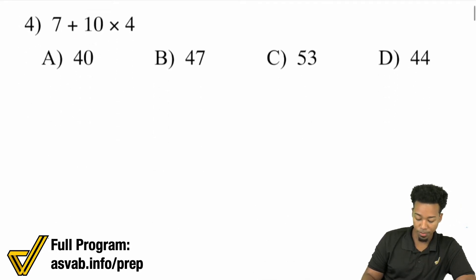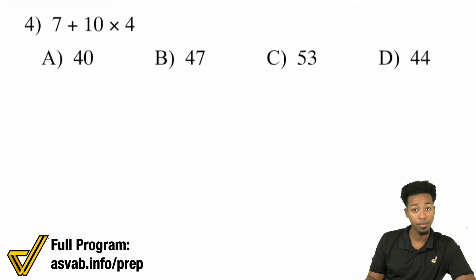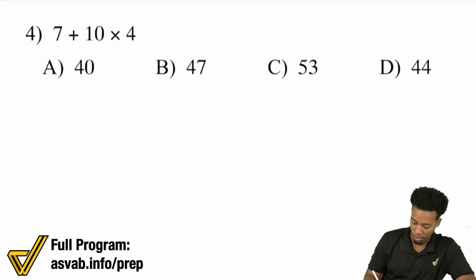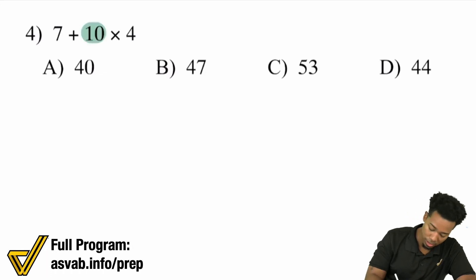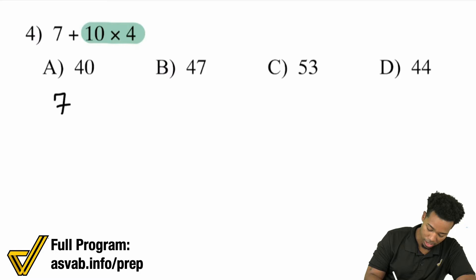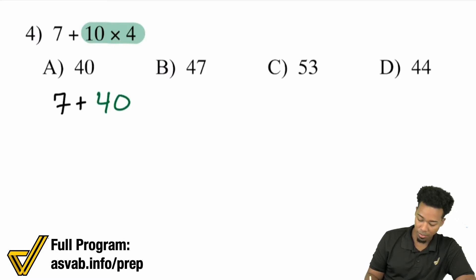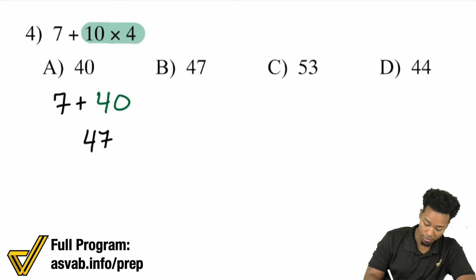Number 4: We have 7 plus 10 times 4. Notice we have addition and multiplication — which one comes first? Multiplication. So we're going to handle 10 times 4 first, and that will end up being 7 plus 40. Then 7 plus 40 ends up being 47.